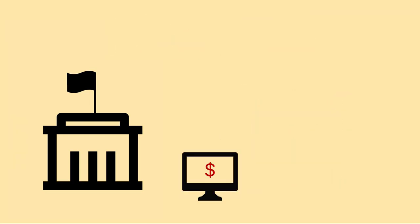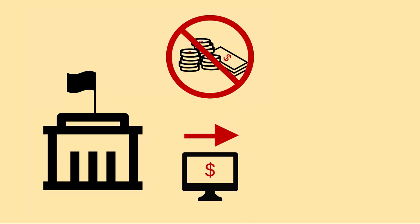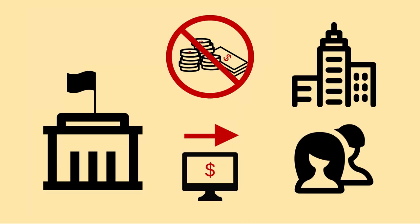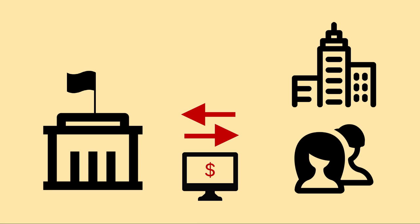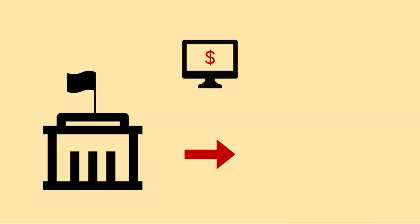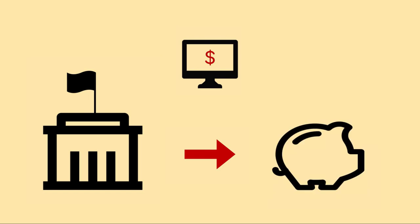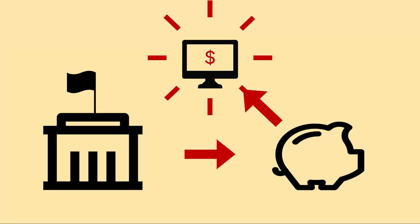All government spending is done electronically — the government doesn't dole out notes and coins. The same is true for taxation; all taxes are paid electronically or by cheque. No physical money changes hands between the government and the private sector. To make these electronic payments for spending, the government instructs its bank — the central bank — to add money into an account.